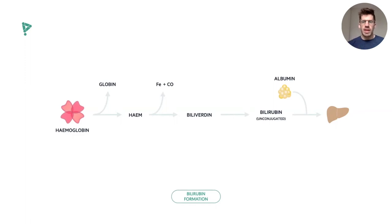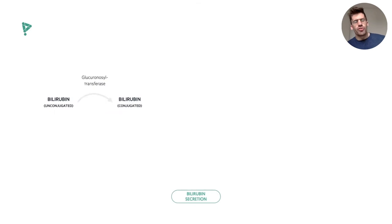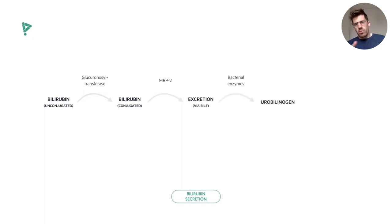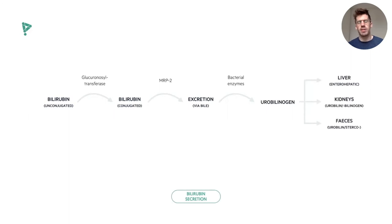In the liver, unconjugated bilirubin — which is insoluble — is conjugated by the enzyme glucuronyl transferase to make it soluble. The resulting conjugated bilirubin is transferred from hepatocytes into the bile canaliculi via membrane proteins such as MRP2. When put into the small intestines, it is acted on by bacterial enzymes and broken down into substances such as urobilinogen. Urobilinogen can then take three pathways: recycled through the enterohepatic circulation back to the liver, excreted via the kidneys as urobilin or urobilinogen, or excreted in the faeces as urobilin or stercobilin. Stercobilin is the reason for the normal colour of our faeces.